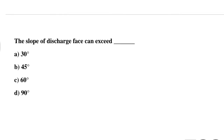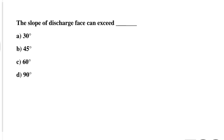Question 21: The slope of the discharge face can exceed — Option A: 30°, Option B: 45°, Option C: 60°, Option D: 90°. The correct answer is Option D: 90°.